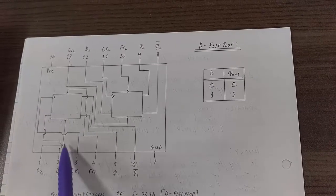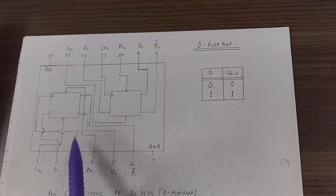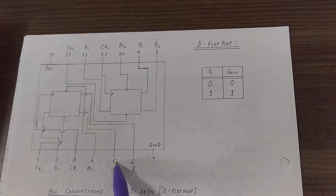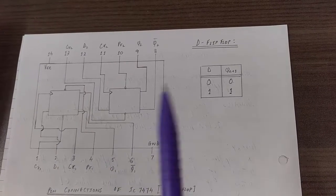Data is given at pin number 2 and clock is given at pin number 3. And Q is taken from pin number 5 and Qn bar is taken from pin number 6. Now let's verify the truth table.